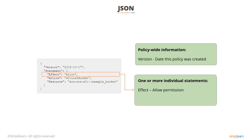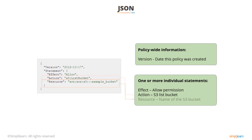The effect is either allow or deny when a user requests access. The default is that resources are denied to users, so you typically specify that you will allow users access. The action is what you will allow – each AWS service has its own set of actions. In this example we're allowing S3 ListBucket access, and any actions not explicitly allowed are denied. Finally, the resource defines what resources the action applies to. In this example we're allowing ListBucket access on the example bucket, and users with this policy won't be able to access any other buckets.